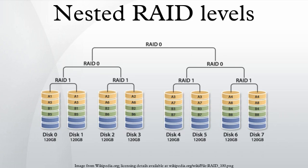The usable capacity of a RAID 0+1 array is the same as a RAID 1 array, where half of the total capacity is used to mirror the other half, where N is the total number of drives and C is the capacity of the smallest drive in the array.